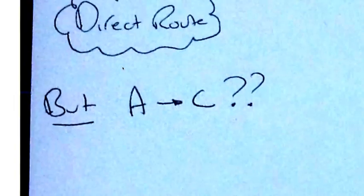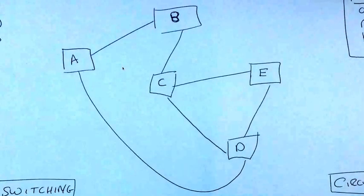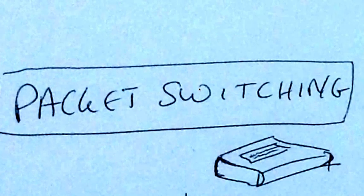But as we've just seen, A to C, we cannot get there. Same with A to E. We cannot get there in a direct route. So how do we overcome this? Well, we can use two methods.